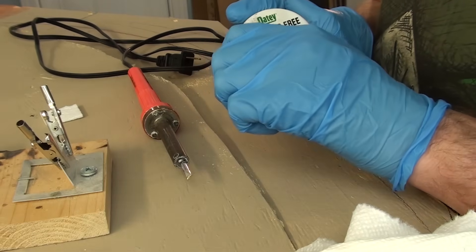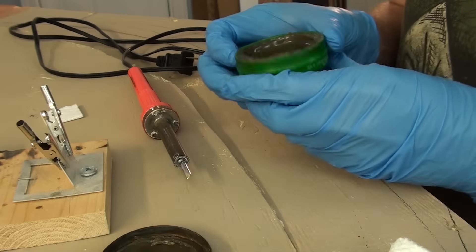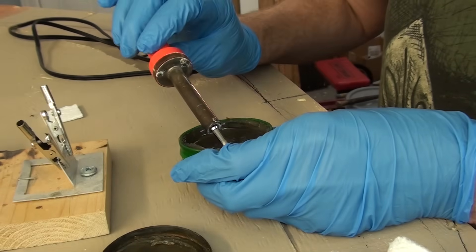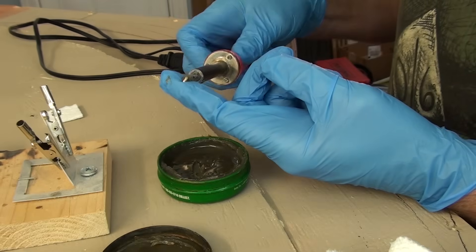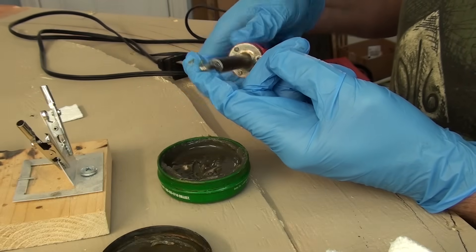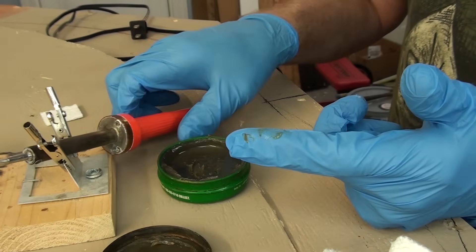We'll start with our tinning flux. Pull that out and I'm going to slightly coat just like that and then wipe it with my glove all the way up. Got a nice film on. We'll put that down.